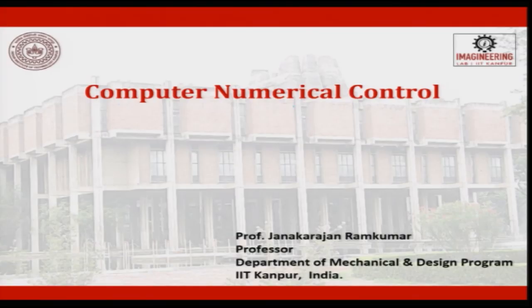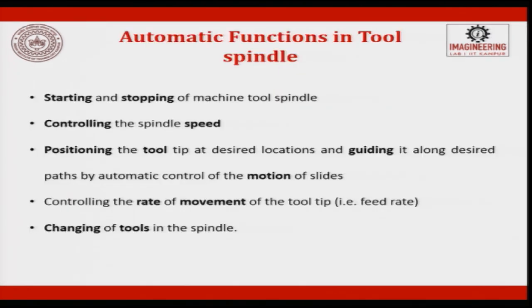Welcome to the next lecture on Computer Numerical Control. Let us look a little more on functions. The automatic functions in tool spindle in a CNC machine include starting and stopping of the machine tool spindle by a call of a command or press of a button, controlling the spindle speed, positioning the tool tip at the desired location, and guiding it along a desired path by automatic control of the motion of slides.